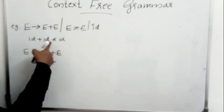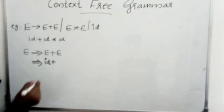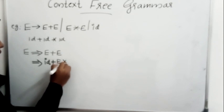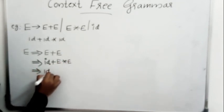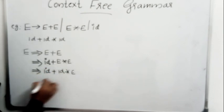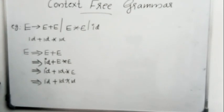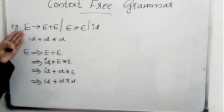I need ID star ID next, so I have to bring star into context. I can expand the second E as E star E, since E has such a production. Then this E becomes ID, and in the next step the remaining E is converted into ID. This is how I generate ID plus ID star ID — this is the derivation of the string from the given grammar.